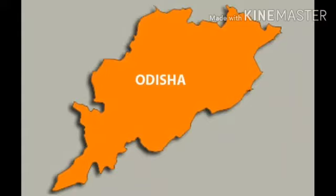Odissi is one of the eight classical dance forms of India. The famous dance is Odissi, also known as Orisi. Its origin is traced to the state of Odisha in eastern India. It is the oldest surviving dance form of India on the basis of archaeological evidence.